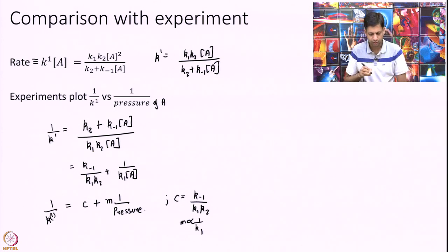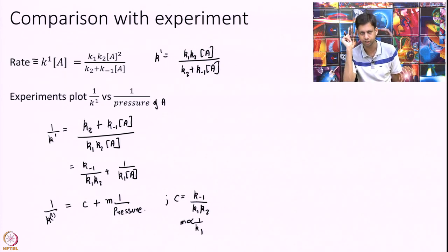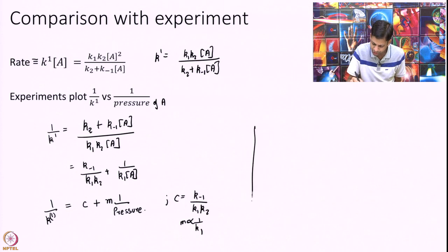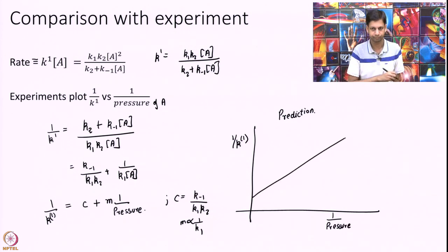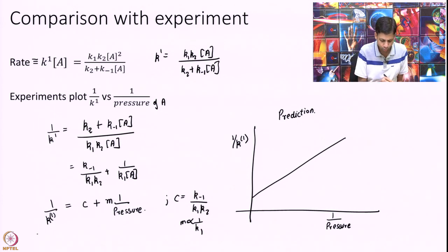You see what we have got is 1 over K1 is equal to some mx plus C, where x is 1 over pressure. My prediction is, at a given temperature, if I plot 1 over K1 versus 1 over pressure, I should get a straight line. That is, this is an equation of a straight line.